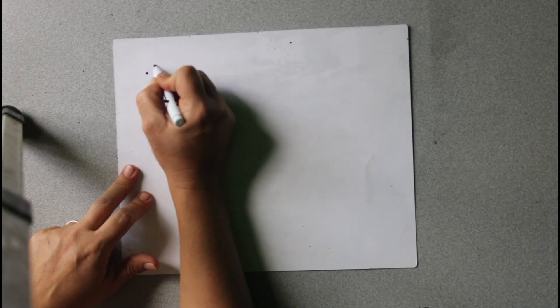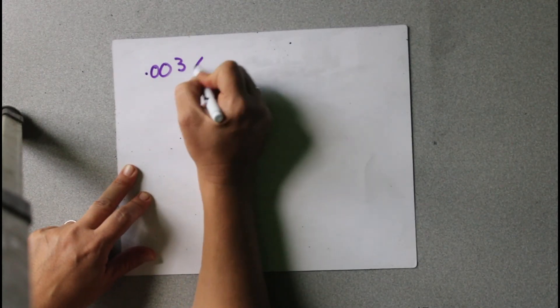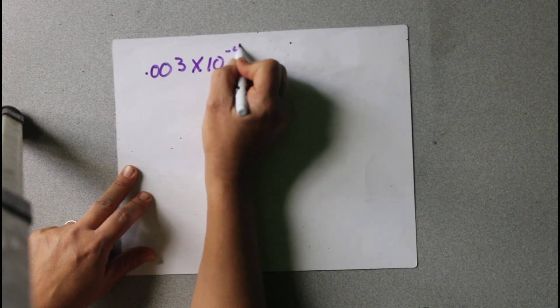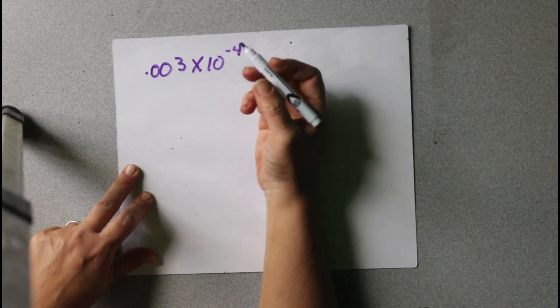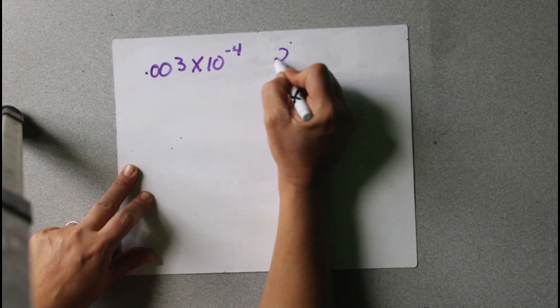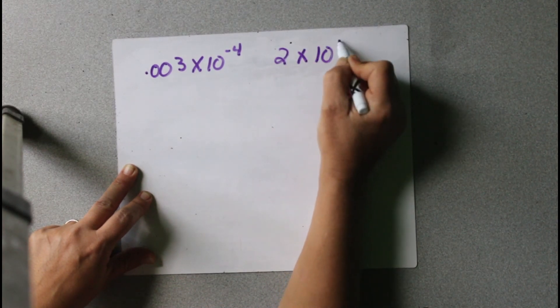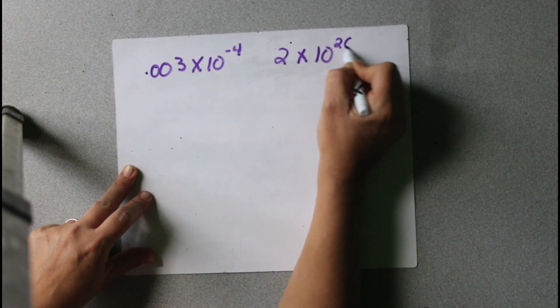We're going to go ahead and do lesson 80 as well. Lesson 80 is about operations with scientific notation. When it gives us a problem, it asks us to write the numbers in scientific notation and then multiply them together.